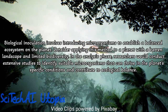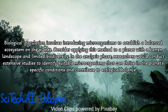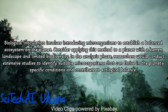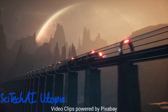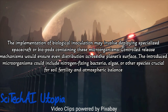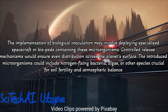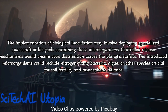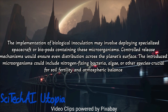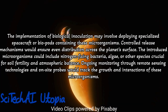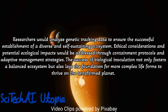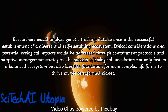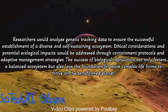Method 12: Biological Inoculation. Analyze the planet's existing biosphere, if any, to understand its biodiversity, ecological dynamics, and potential for adaptation to new life forms. Develop genetically modified microorganisms tailored to thrive in the planet's altered conditions and contribute positively to ecosystem development. Design a controlled release mechanism for introducing these modified microorganisms, taking into account potential ecological interactions and minimizing the risk of unintended consequences. Implement comprehensive monitoring systems including genetic tracking and ecological surveys to assess the impact of biological inoculation, and establish protocols for adaptive management.